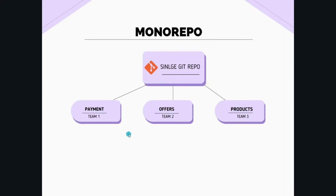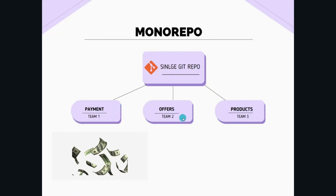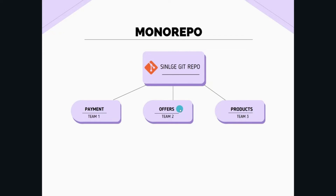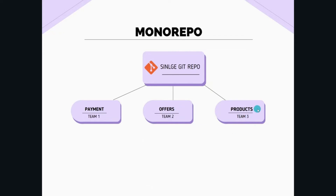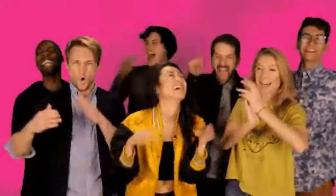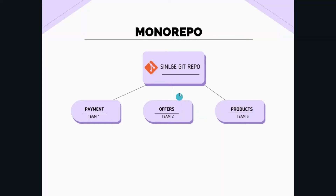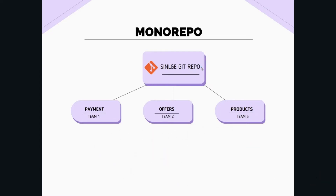For example, in an e-commerce website, there could be a team one that takes care of the payment functionality, a team two which is only responsible for displaying offers to customers, and a team three which only handles the products displayed to customers. These three teams can work independently and keep pushing their code to a single git repository. There are many benefits of using mono repo — let's discuss them.